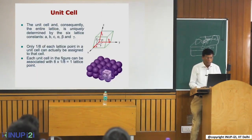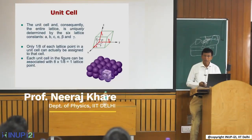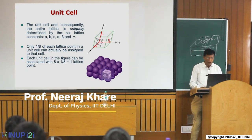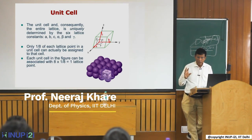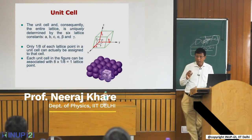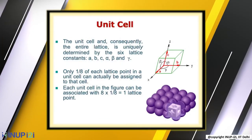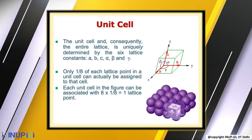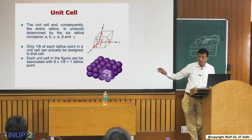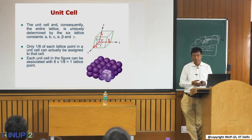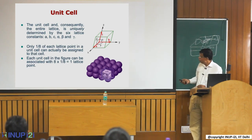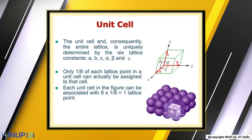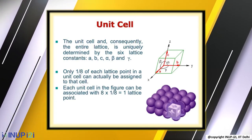Before going ahead, let me briefly explain the crystallinity of materials. For any material, in single crystal or polycrystal, we define a unit cell. The unit cell is the minimum dimension such that if you take it and repeat it hypothetically, you can construct the whole material. A unit cell has parameters a, b, and c, and angles alpha, beta, and gamma with the x, y, and z directions.